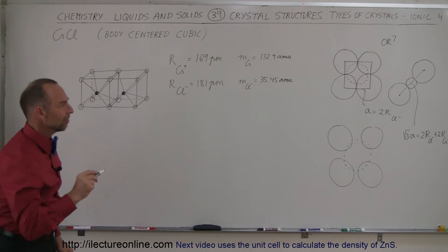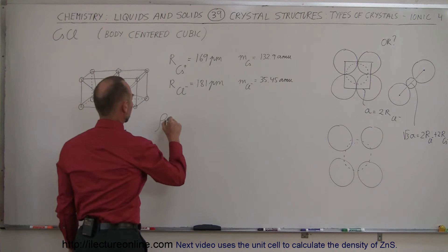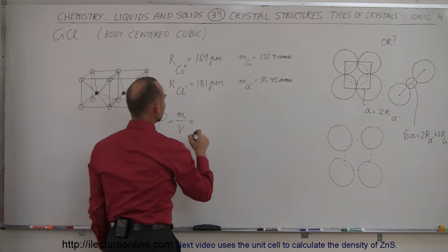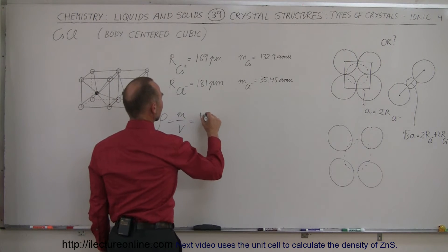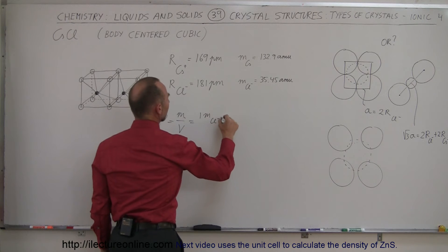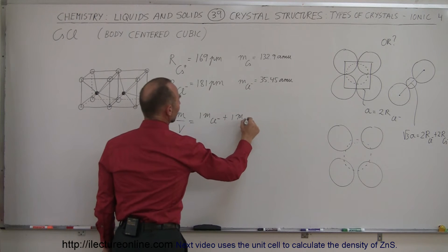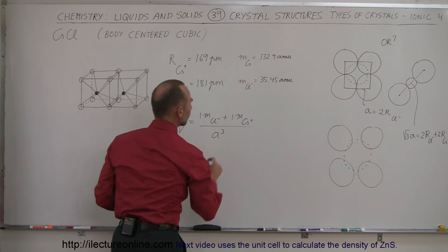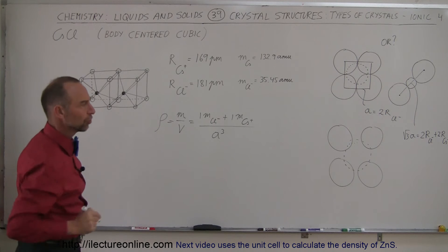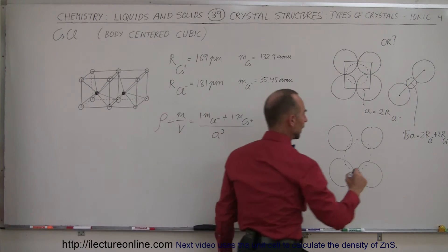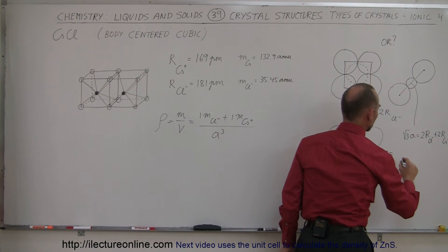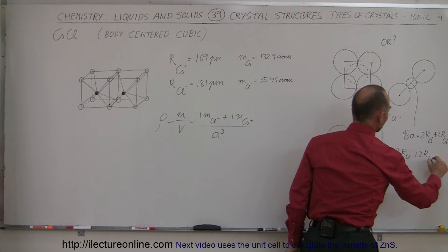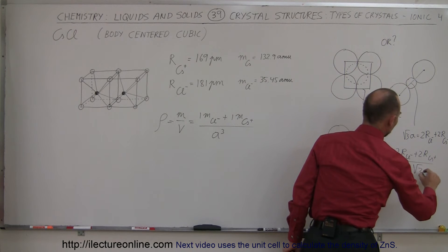Now let's find the density of this structure: density equals mass divided by volume. The mass here is one times the mass of a chlorine ion plus one times the mass of a cesium ion, divided by the volume, which is A cubed. We need to find A cubed using our formula, where A equals two times the radius of the chlorine ion plus two times the radius of the cesium ion, divided by the square root of three.